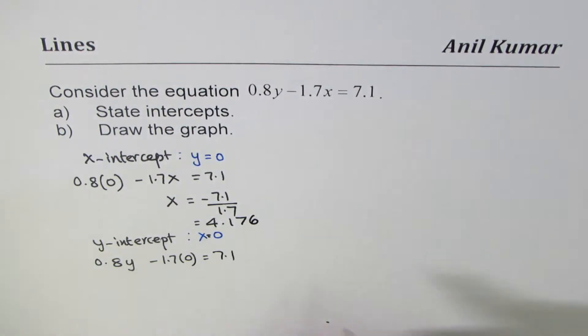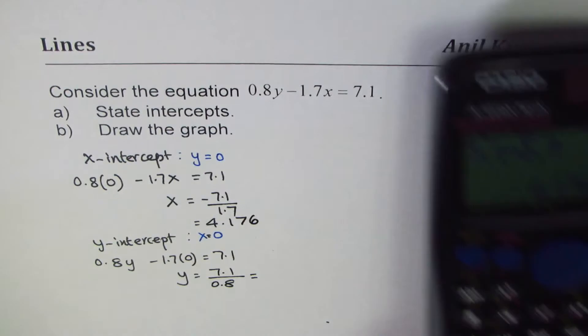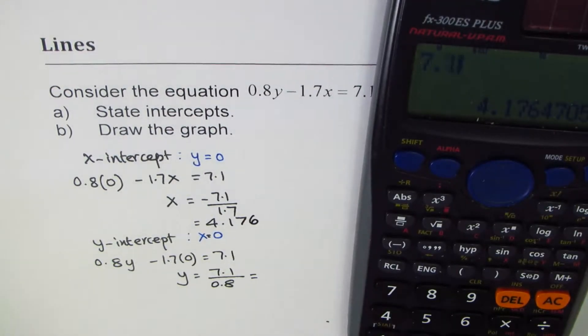So we have y equals 7.1 divided by 0.8, and that gives you a value of 7.1 divided by 0.8.